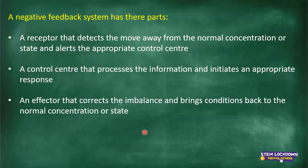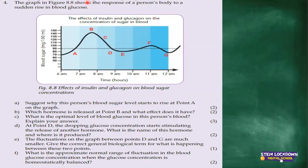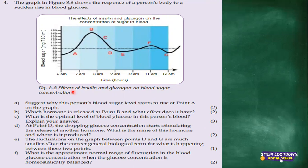Question four: The graph in Figure 8.8 shows the response of a person's body to a sudden rise in blood glucose. This graph shows the effects of insulin and glucose on blood sugar concentrations. Part A: suggest why this person's blood sugar levels start to rise at point A on the graph. Point A is around almost 7 a.m. Chances are this person is probably having breakfast, so there's an increase in food intake or glucose intake around 7 a.m. as people are getting ready for the day.